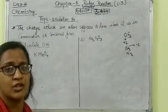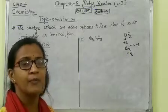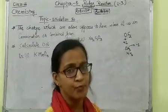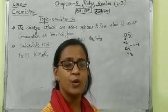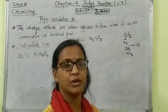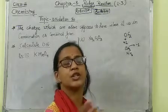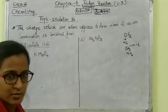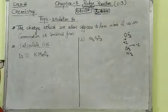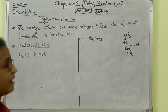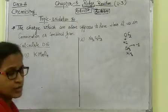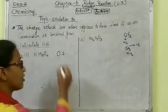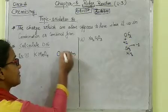The oxidation number is essentially the charge — the general valency charge when atoms combine, which we have studied in 9th and 10th grade. For example, here we write KMnO4 and someone is asking: what is the oxidation number or oxidation state of manganese in this particular compound?